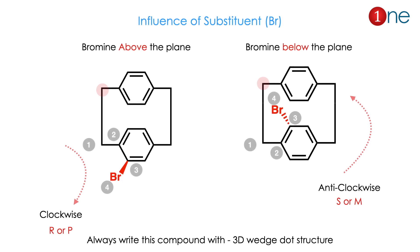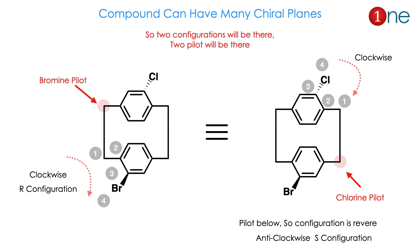Now let us see the influence of substitution position. If bromine is above the plane, evaluating from the pilot atom gives one-two-three-four clockwise. If bromine is below the plane, it will be anti-clockwise — the opposite. So the substitution position is critical. Always draw the compound with a 3D wedge structure; otherwise you will commit a serious mistake.